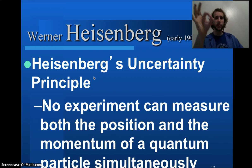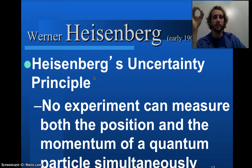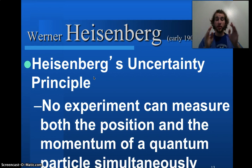And so, what Werner Heisenberg said was that if you were looking at electrons, you're going to have this thing we call an uncertainty principle, that no experiment can measure both the position and the momentum or the speed of a quantum particle simultaneously at the same time. Let's think about this.